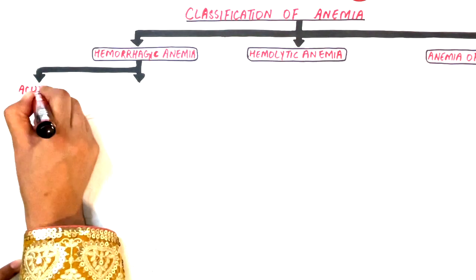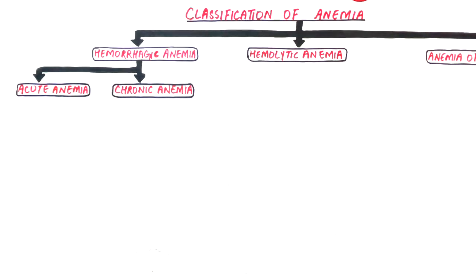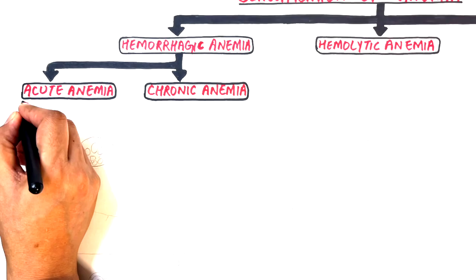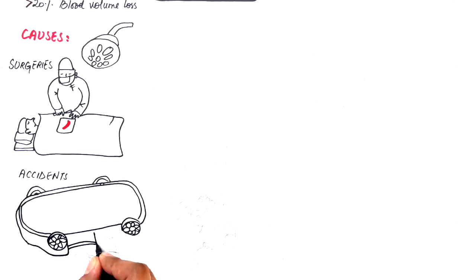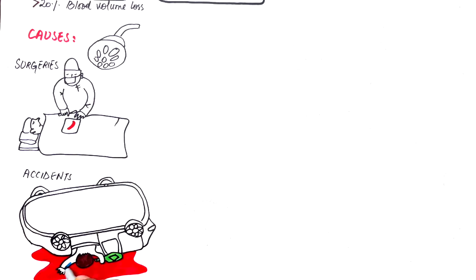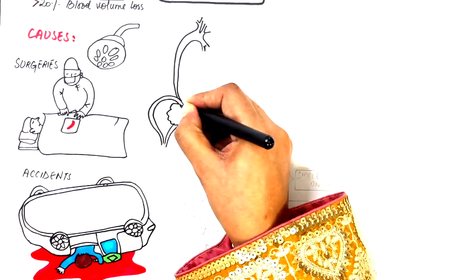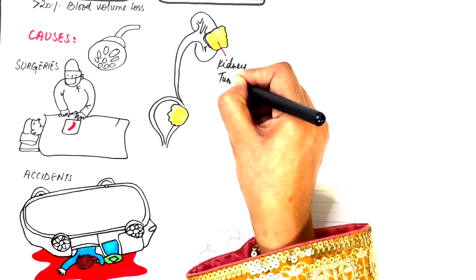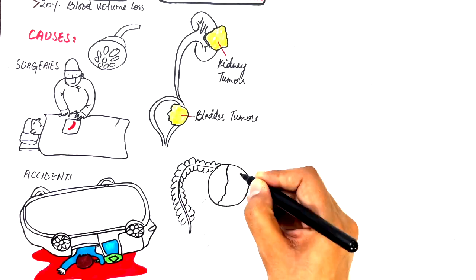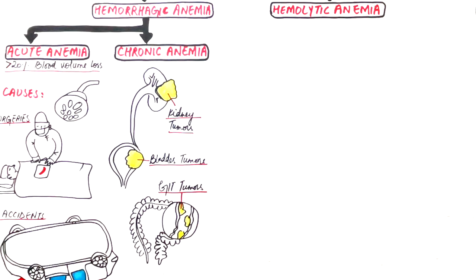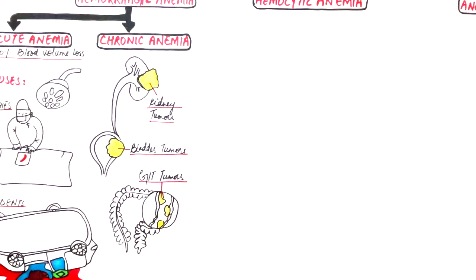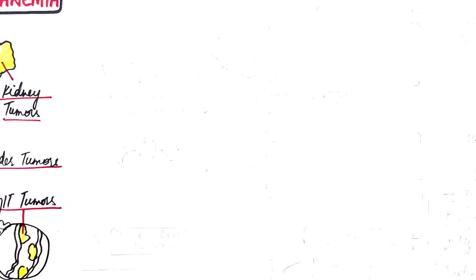Hemorrhagic anemia can be either acute or chronic. In acute hemorrhagic anemia, blood loss exceeds 20% of blood volume, resulting from massive blood loss such as in surgeries or accidents. Chronic hemorrhagic anemia arises from gradual blood loss, as seen in kidney and bladder tumors, cancers or ulcers of the GI tract, and heavy menstrual bleeding. The anemia in the hemorrhagic type is normocytic and normochromic, meaning the remaining red blood cells have normal color and normal size.